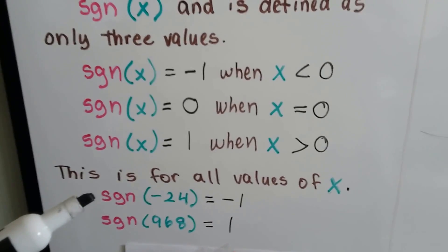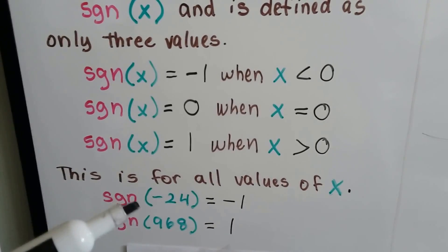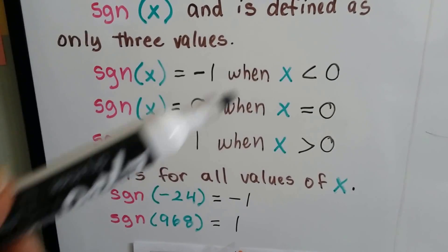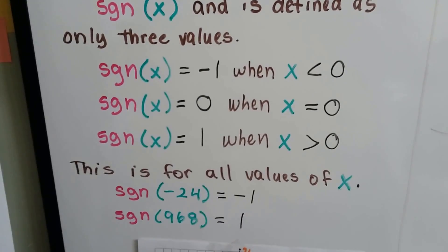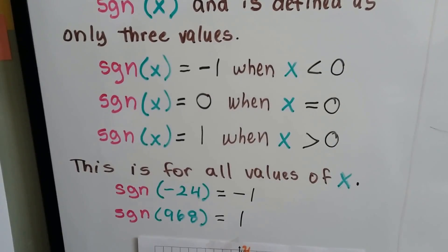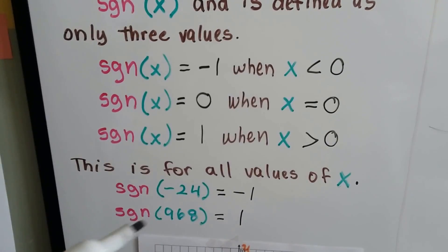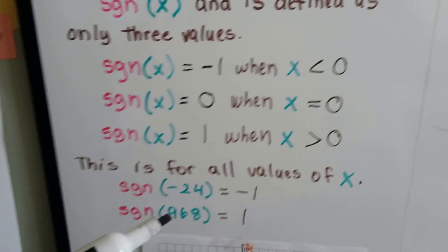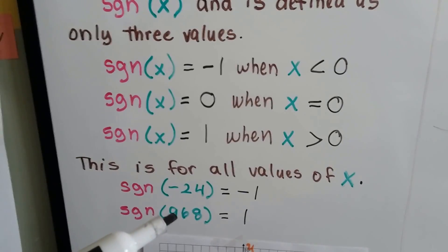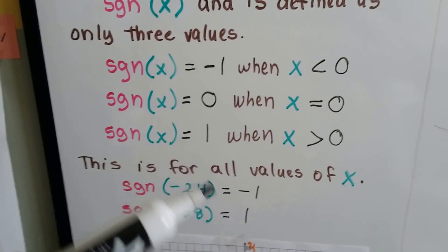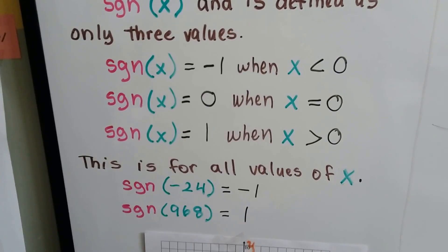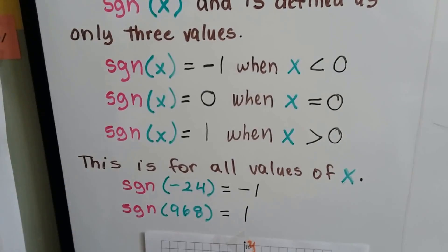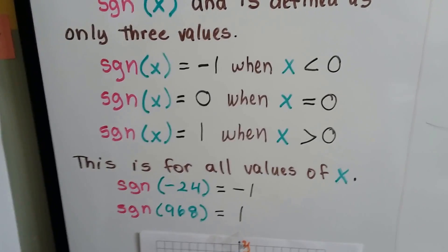So if you have a sign function where x is negative 24, well, that's less than zero, so it's going to be negative one. If the sign function of x is 968, well, that's a lot bigger than zero, so that's going to be a one. Your choices are either negative one, zero, or one — that's it.